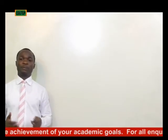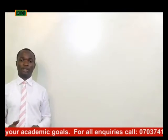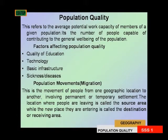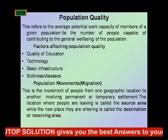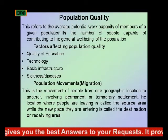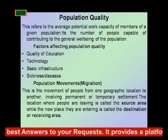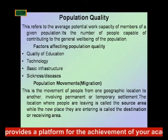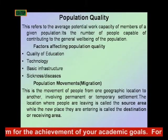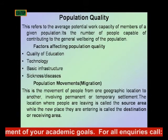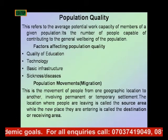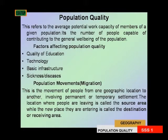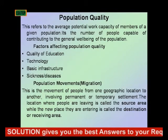Now let's look at population movement, also called migration. Population movement or migration is the movement of people from one geographical location to another, usually involving a permanent or temporary settlement. The location where people are leaving is called the source area or source region, whereas the location they are moving into is referred to as the destination or receiving area.